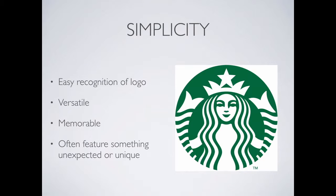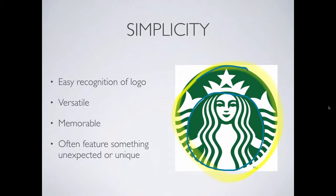It needs to be something that's memorable. One thing I'd like to point out on the Starbucks logo that helps it work really well: you've got the large circle that goes around the outside, and then an inner circle. It's the juxtaposition of those two circles that helps make this logo. There's probably some symbolic nature to why it has two circles, but those things end up being very subtle while helping the logo really succeed.